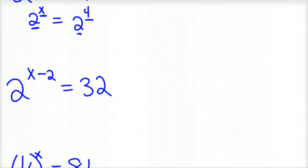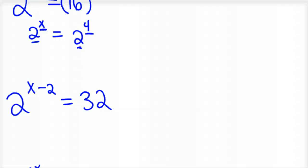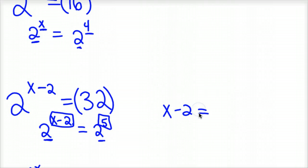Now let's change this up a little bit. So now we've got something that's a little more difficult, we've got 2 to the x minus 2 equals 32. Let's go ahead and convert that 32 to base 2. In this case, we would have 2 to the 5th power because 2 times 2 is 4, 4 times 2 is 8, 8 times 2 is 16, 16 times 2 is 32. Since these bases are the same, that means these two things are the same, so x minus 2 has to be equal to 5.